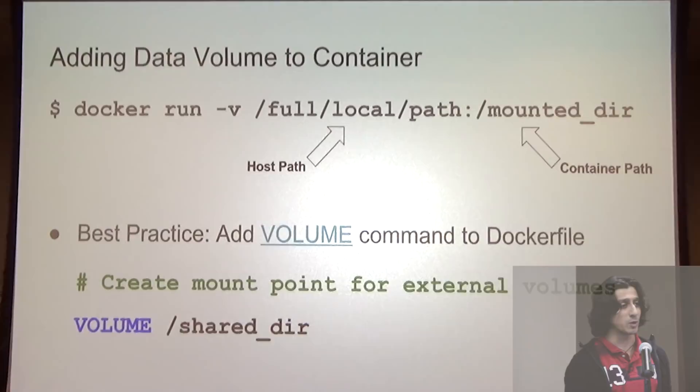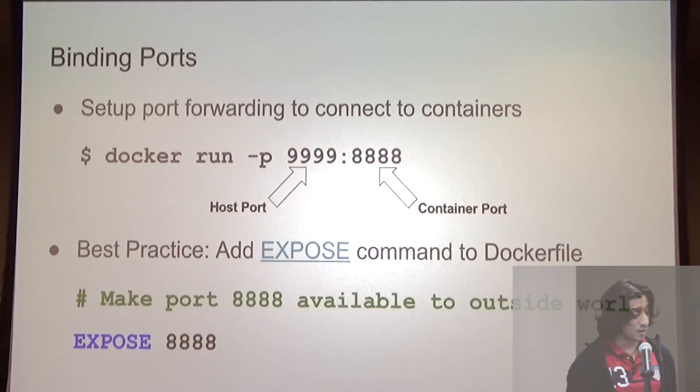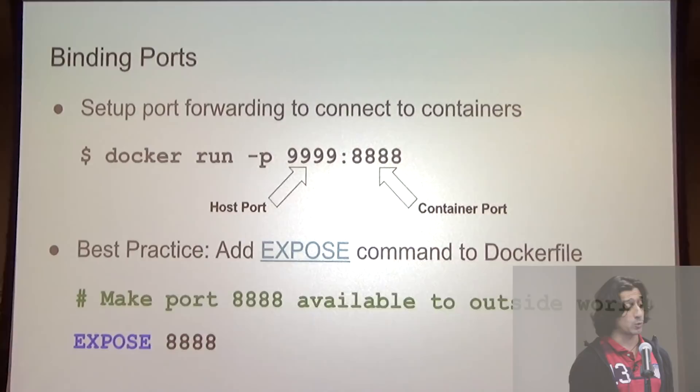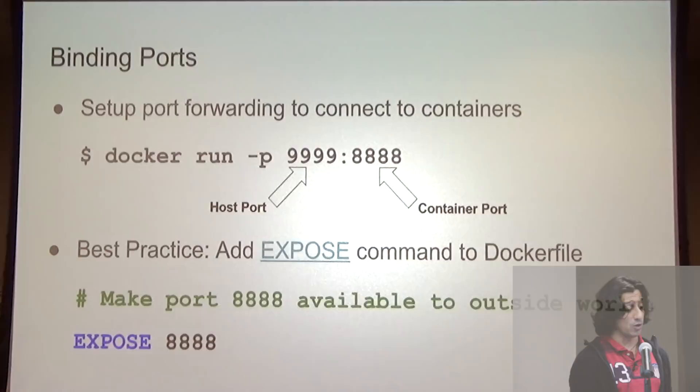We can connect to the outside world fairly easily from containers, but we'll have to set up port forwarding to connect to the inside of containers. When creating a container, we use the -p flag to specify the host port to forward and the container port to expose. We can also add an EXPOSE command to our Dockerfile to be more explicit about our workflow — it doesn't do anything functionally, but it's best to be explicit.